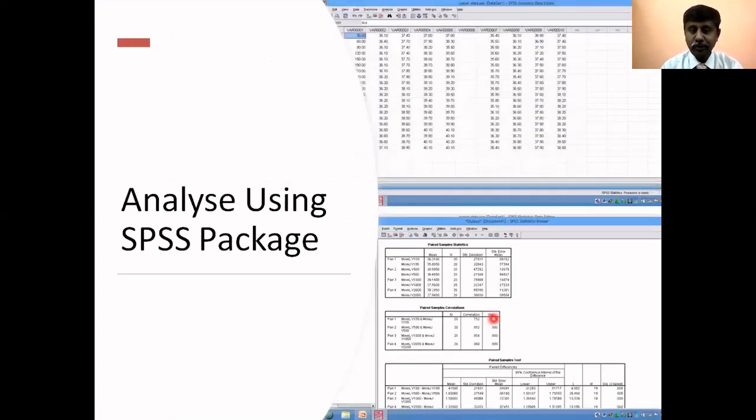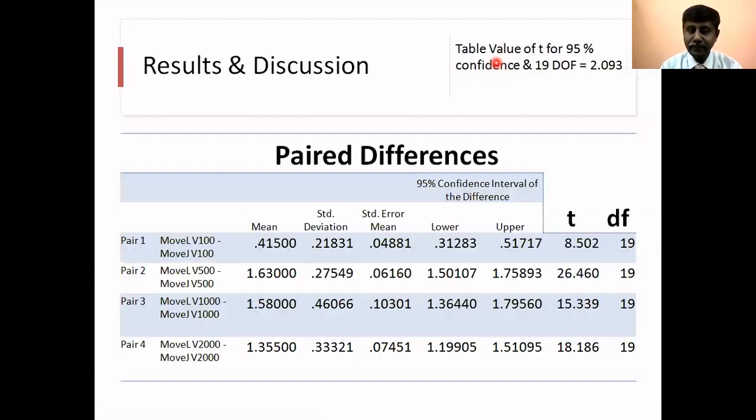I have analyzed these using SPSS packages - statistical package for social sciences. In that I have made a paired sample t-test. For velocity 100 I am comparing Move L and Move J, velocity 500 I am comparing Move L and Move J, for 1000 we are comparing it, for 2000 I am comparing it.